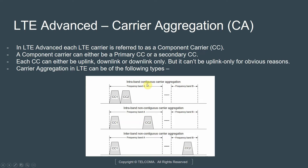In LTE Advanced, each LTE carrier assigned to a user is called a component carrier, or CC. A component carrier can either be primary or secondary. Think of the primary as the main connection LTE carrier to a UE, and a secondary is a component carrier that can go on and off depending on user demand. Each component carrier can be uplink, downlink, or downlink only.